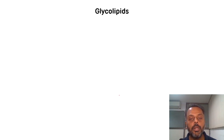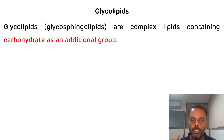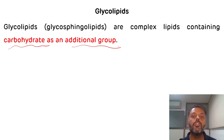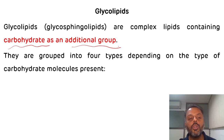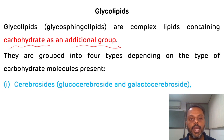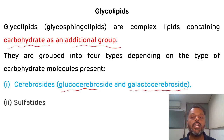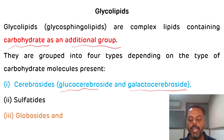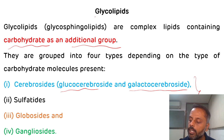Now we will see glycolipids. Glycolipids, as the name suggests, contain fatty acid, alcohol, and carbohydrate as an additional group. These glycolipids are divided into four categories depending upon the type of carbohydrate present: cerebrosides (examples: glucocerebroside and galactocerebroside), sulfatides, globosides, and gangliosides.